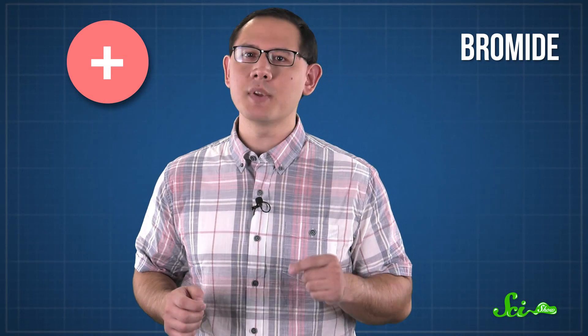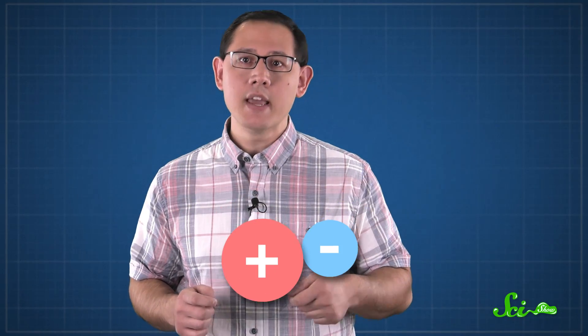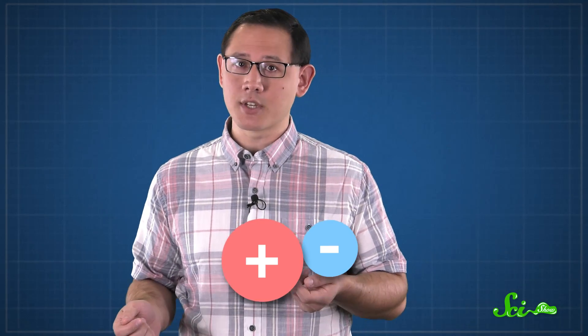But the researchers were able to make rubber self-heal by replacing the sulfur in the rubber with a pair of charged molecules, or ions, called butyl imidazoleum and bromide. Butyl imidazoleum has a positive charge, and it's always accompanied by a negatively charged bromide, just like the ions of sodium and chloride that you find in table salt.